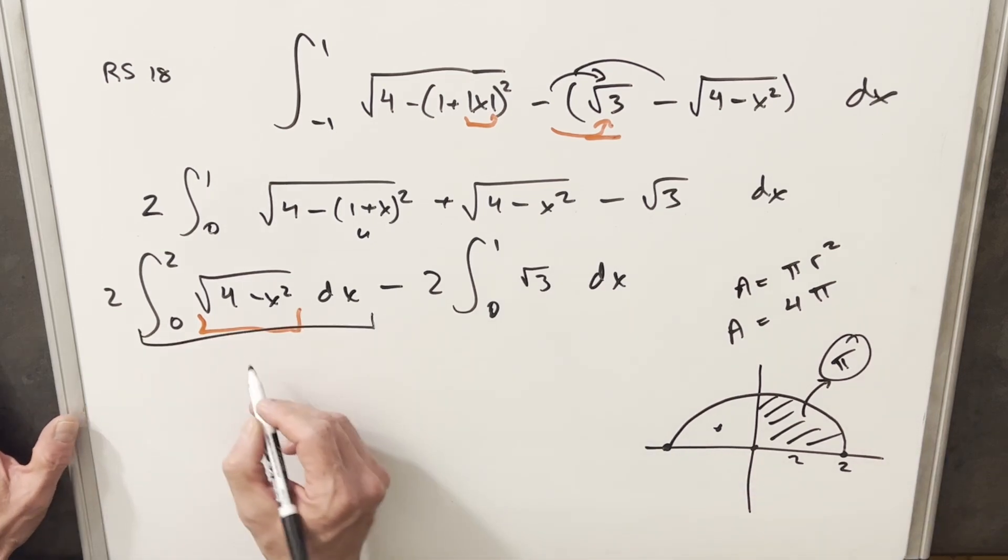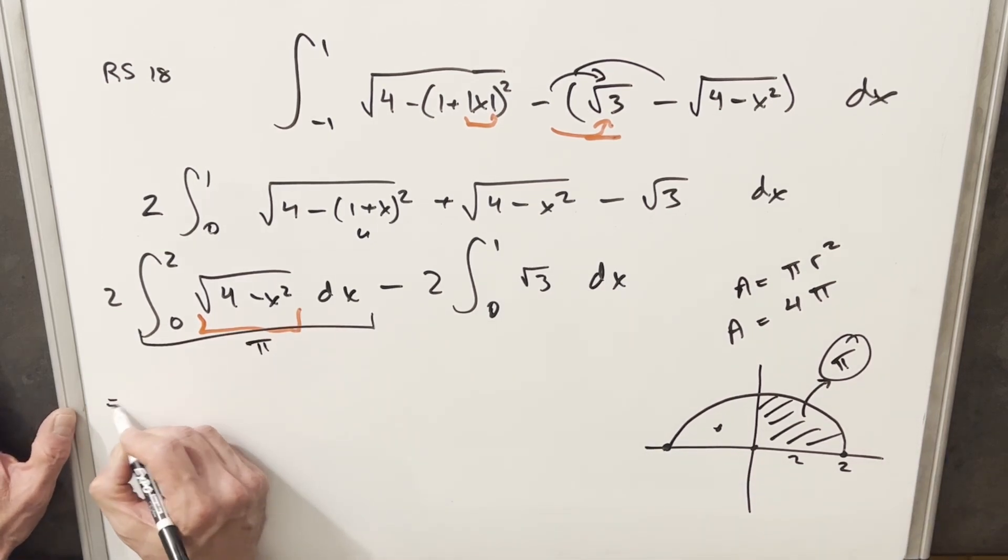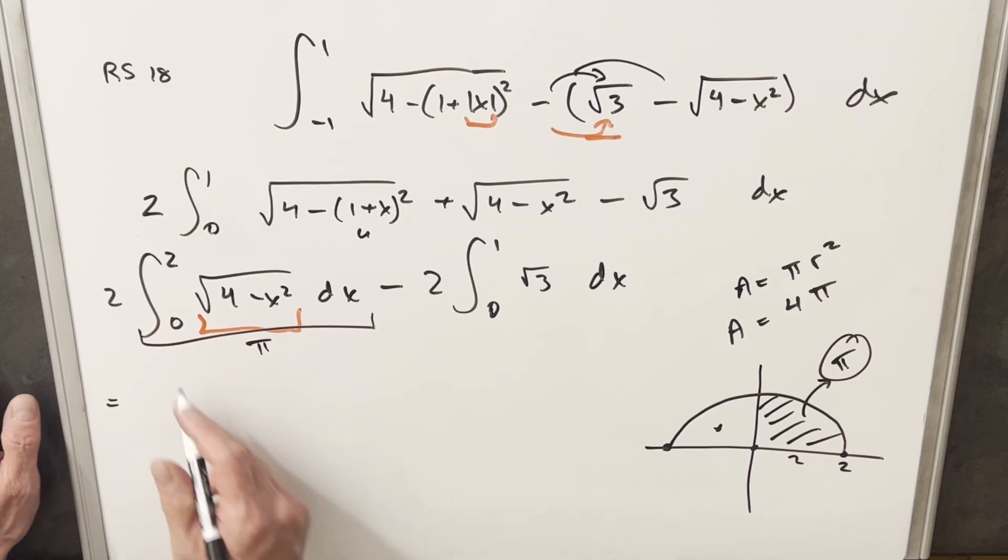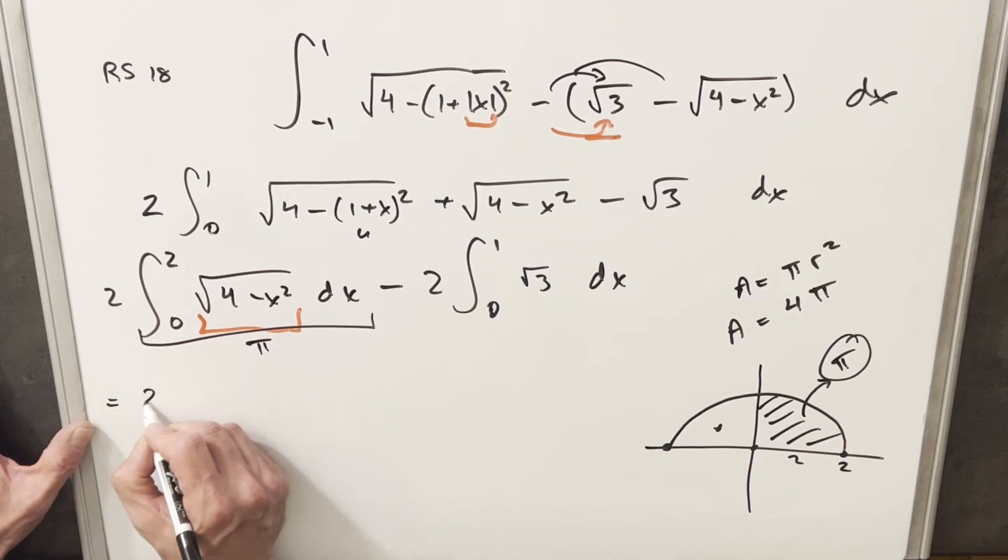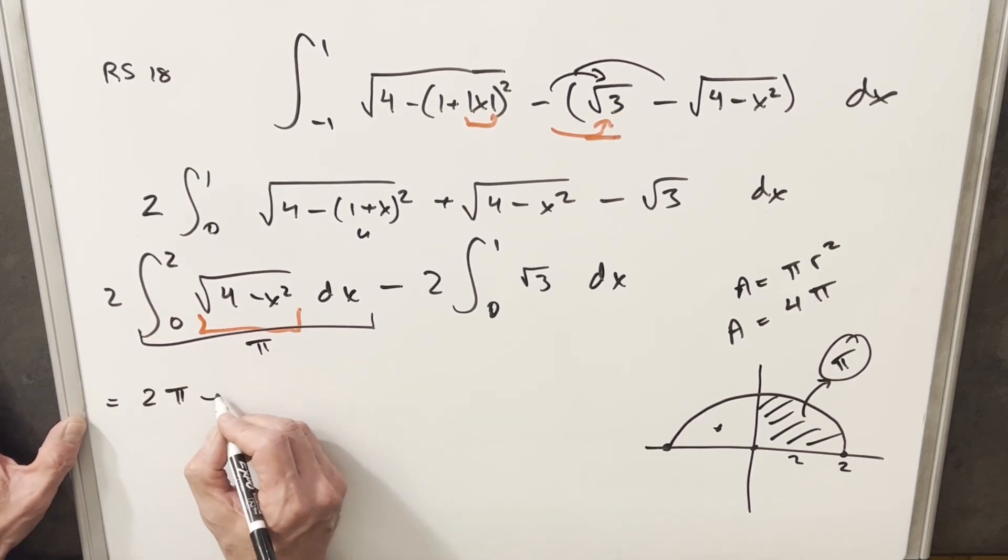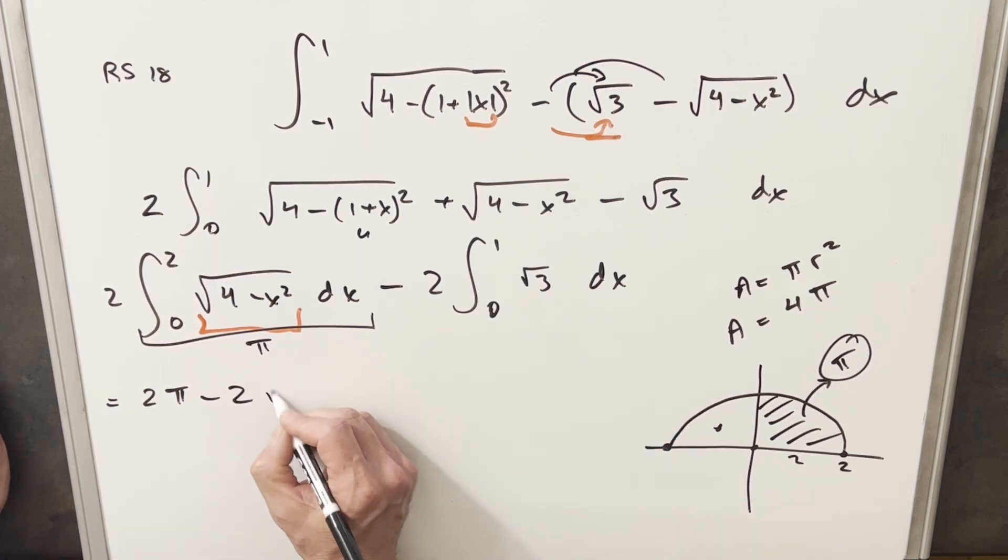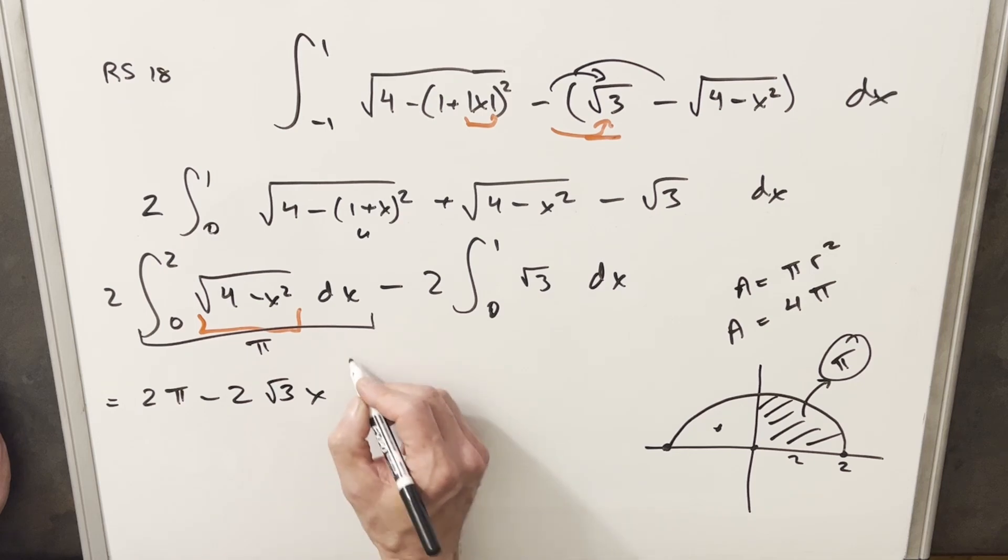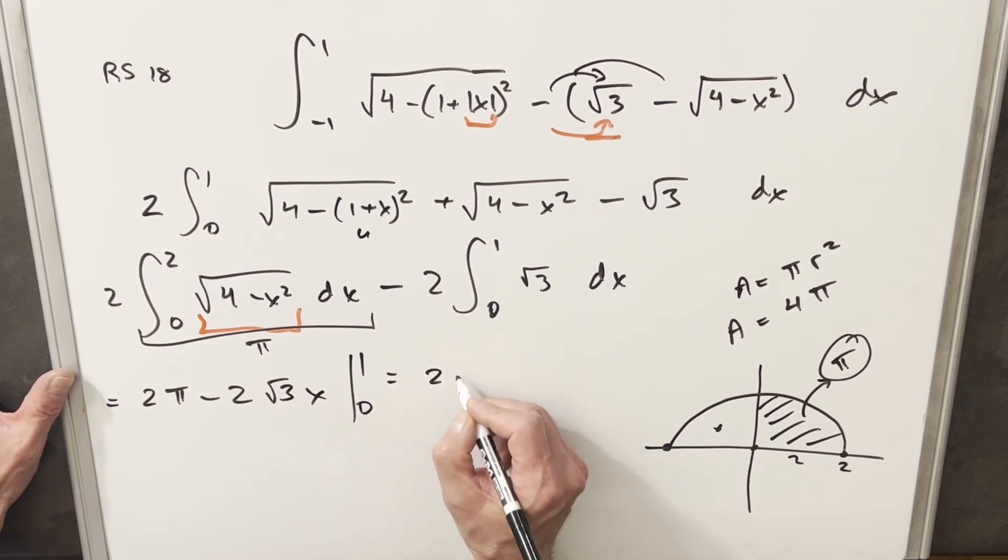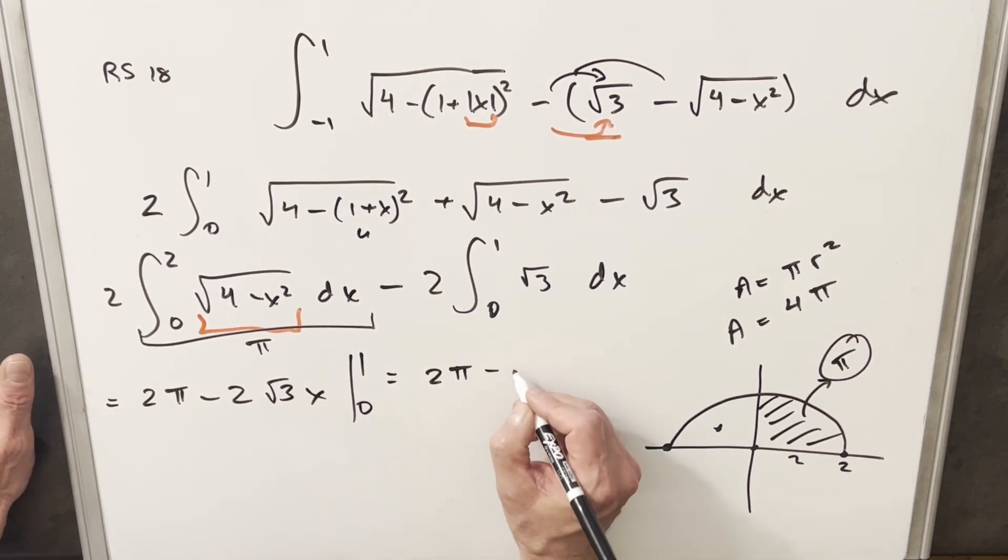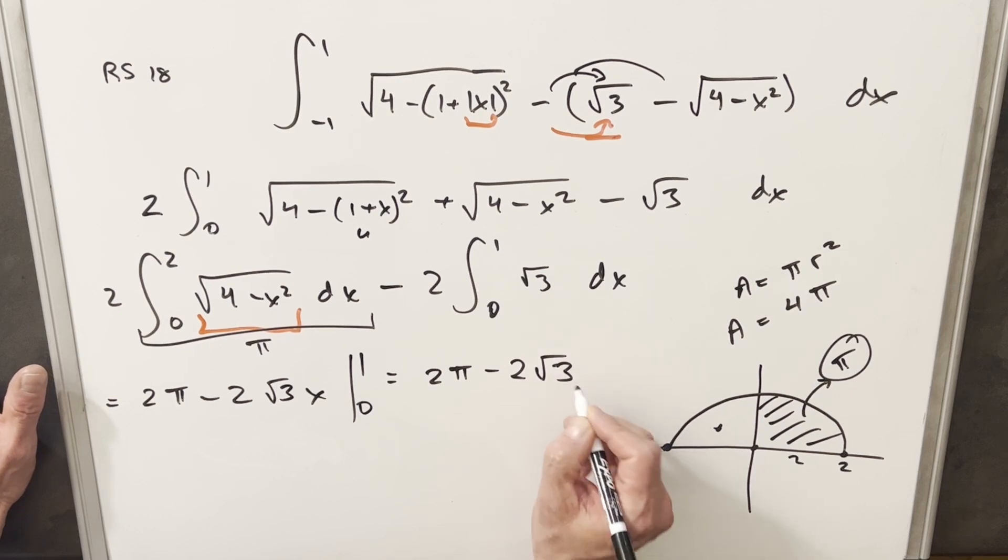Therefore, this integral from zero to two is just going to be pi. Let's not forget our two, so this piece is going to be two pi. We're going to have our minus two. Integrating square root of three, that's just going to be square root of three X, but we need to evaluate it from zero to one. We plug a zero in, we get zero. We plug a one in, we get one. So what we're left with for our final solution is just going to be two pi minus two square root of three.